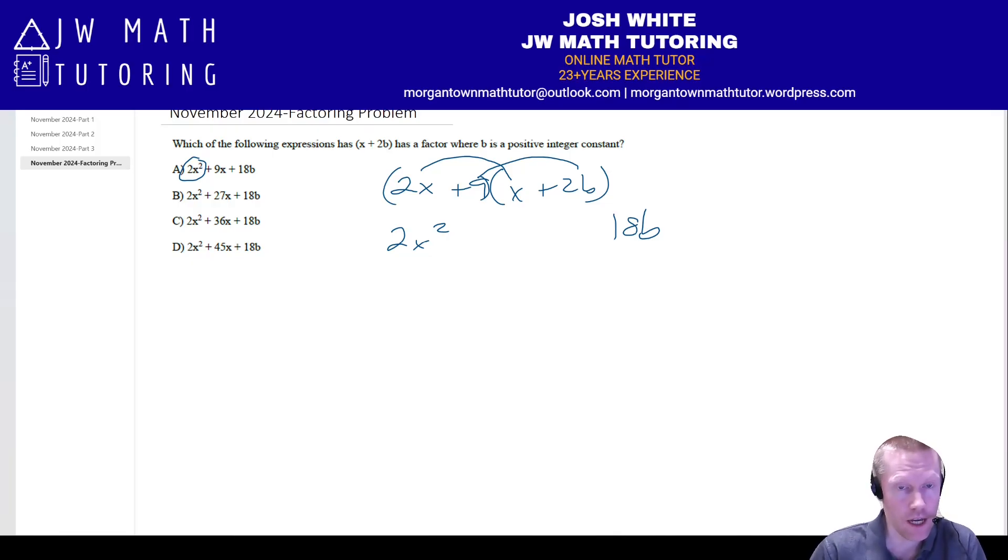All right, so now that you have this, basically what you're checking is the middle terms, and you're seeing the outer and inner, which for this factored form are going to be 9x plus 4bx. And you're comparing those to the middle terms from all of the answer choices.